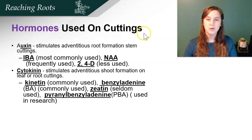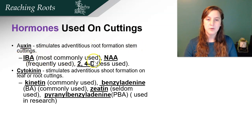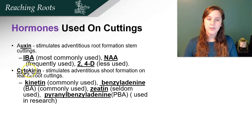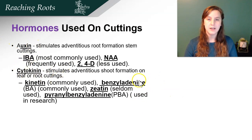Some hormones are used to increase the speed of rooting, or some plants can't produce successful cuttings unless you use hormones. Auxin is going to stimulate advantageous root formation on stem cuttings — IBA is the most commonly used, NAA is also frequently used, and 2,4-D is not commonly used. You can also use a cytokinin to stimulate advantageous shoot formation on leaf or root cuttings — kinetin is the most commonly used. So auxin is for roots and cytokinin for stimulating shoot production.